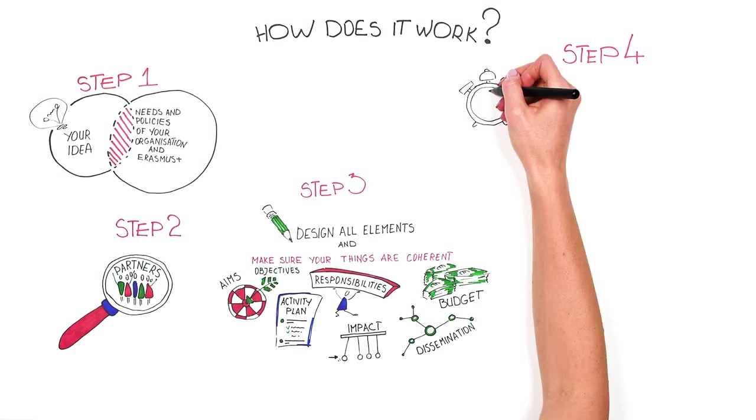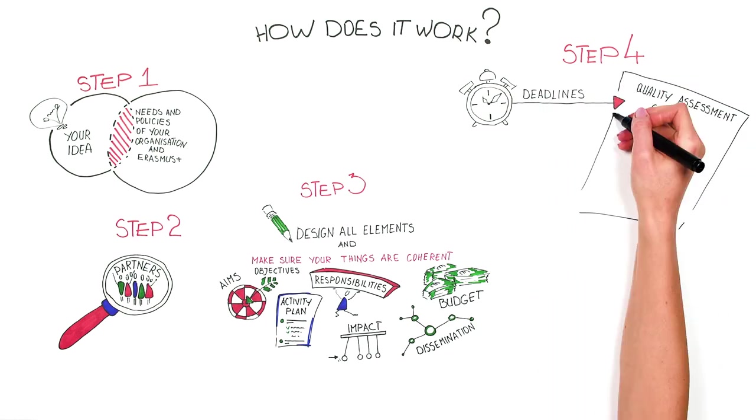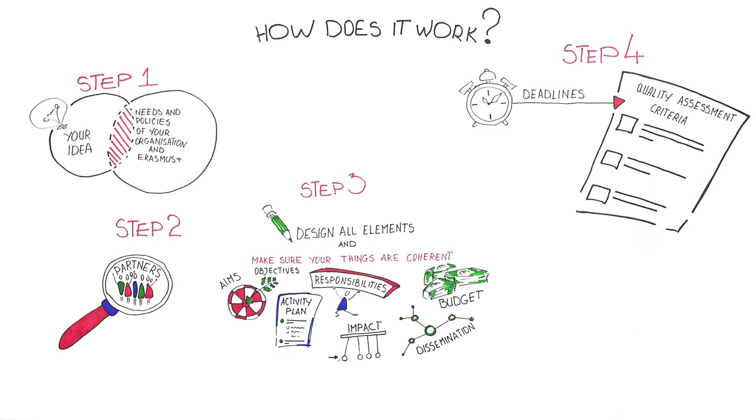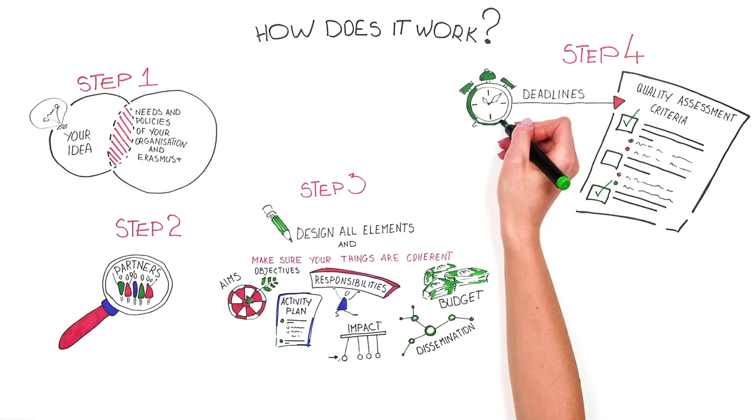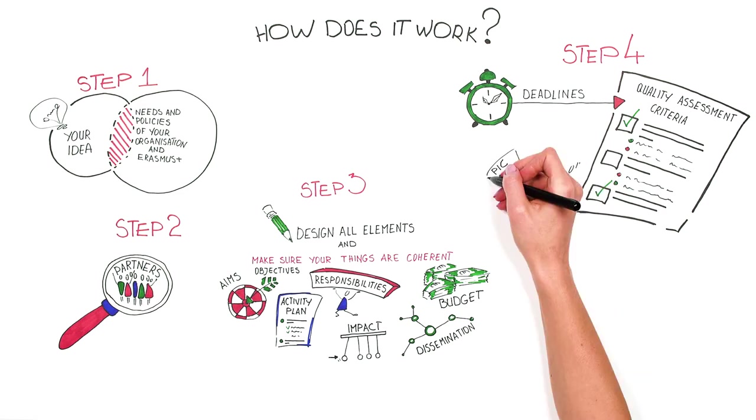Step 4: Check the deadlines and quality assessment criteria. Submit the application form. For that, you must be registered with the ECAS and have a PIC code. More info on how to register, you will find on the website of the ECAS or your national agency.